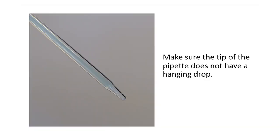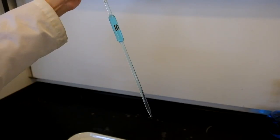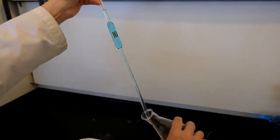Inspect the tip of the pipette to make sure that it doesn't have a hanging drop. If there is a hanging drop at the tip of the pipette, touch the tip of the pipette on the wall of the beaker and recheck to ensure that the position of the meniscus has not changed. Now you're ready to deliver the solution into an Erlenmeyer flask.